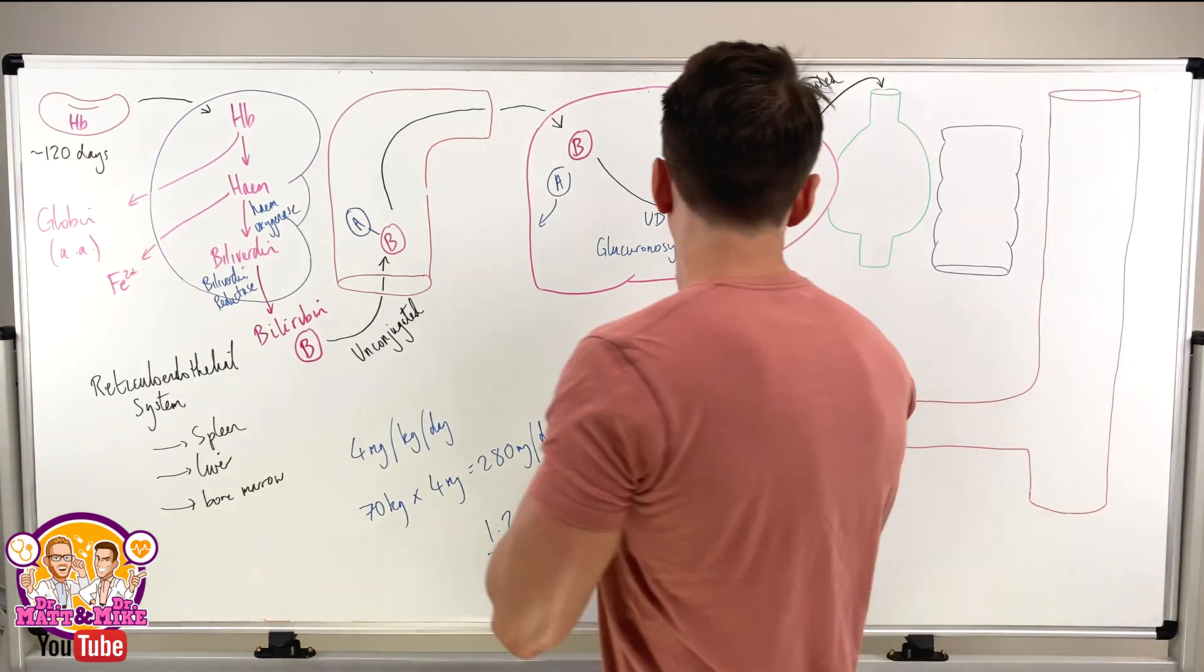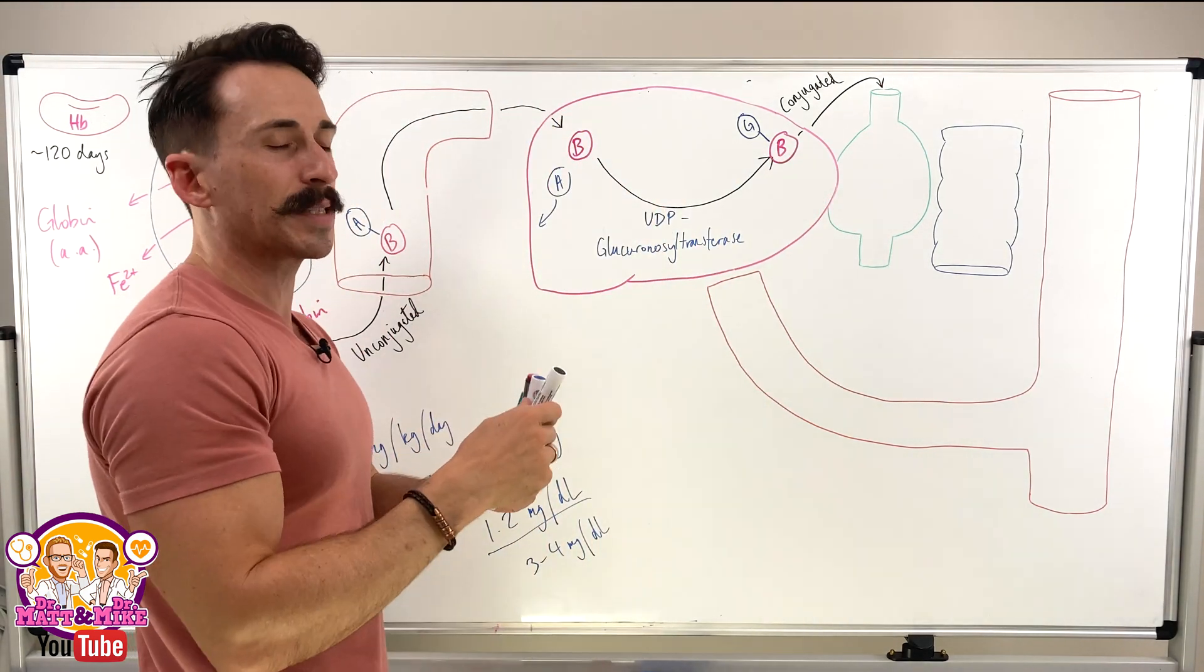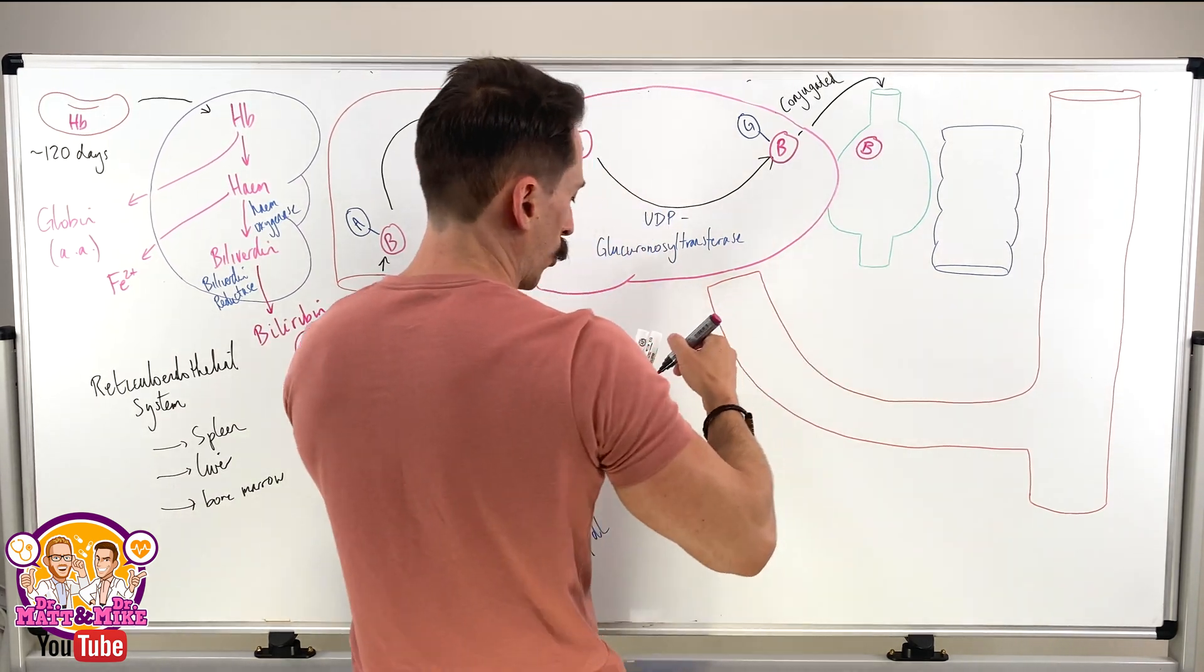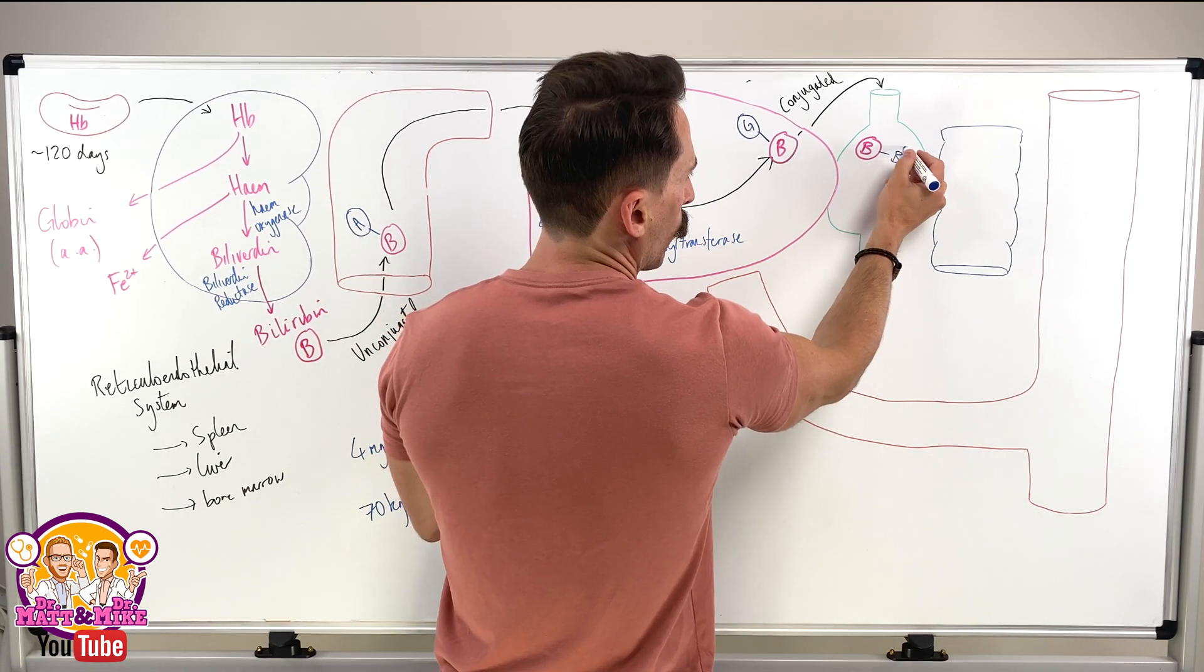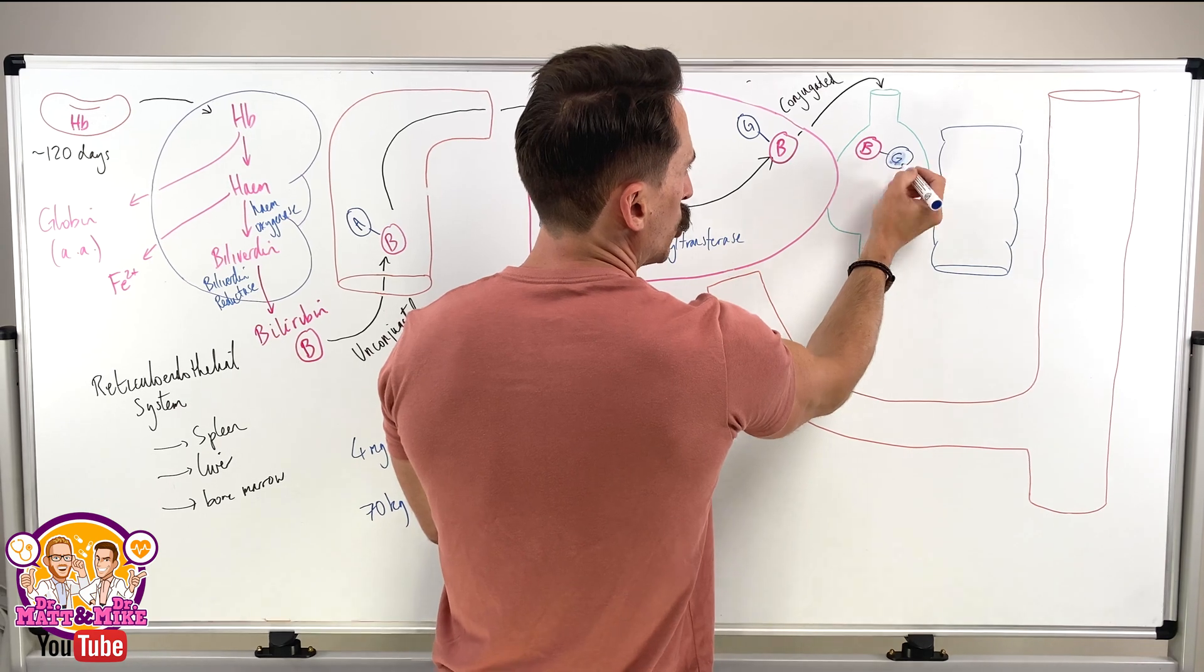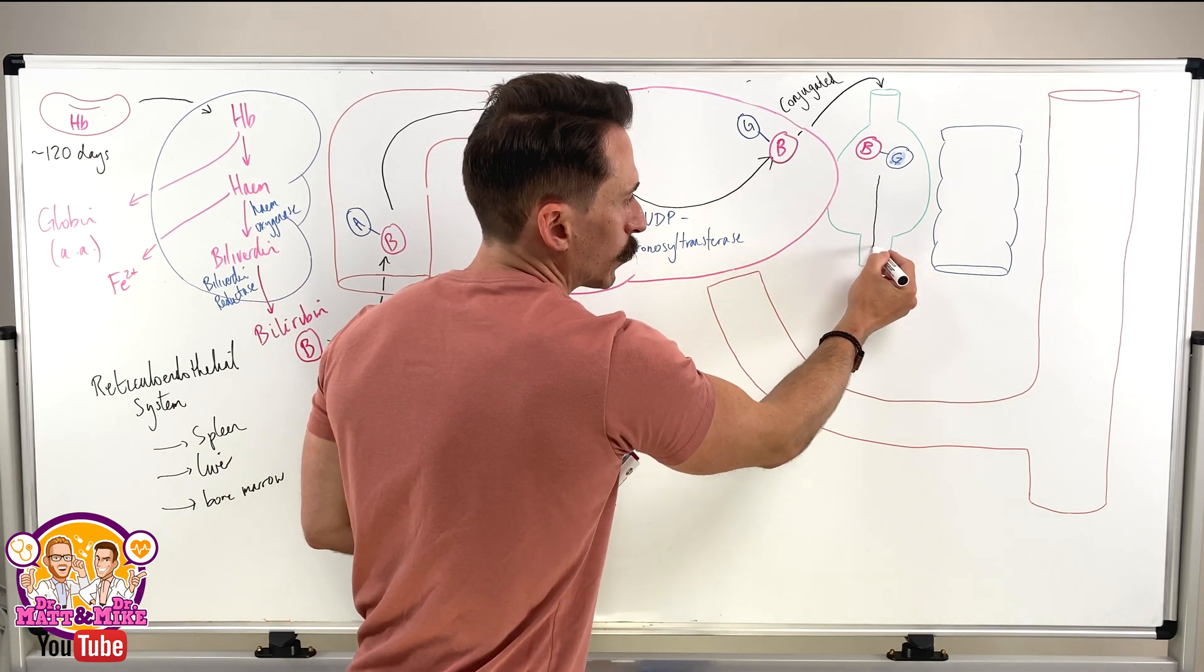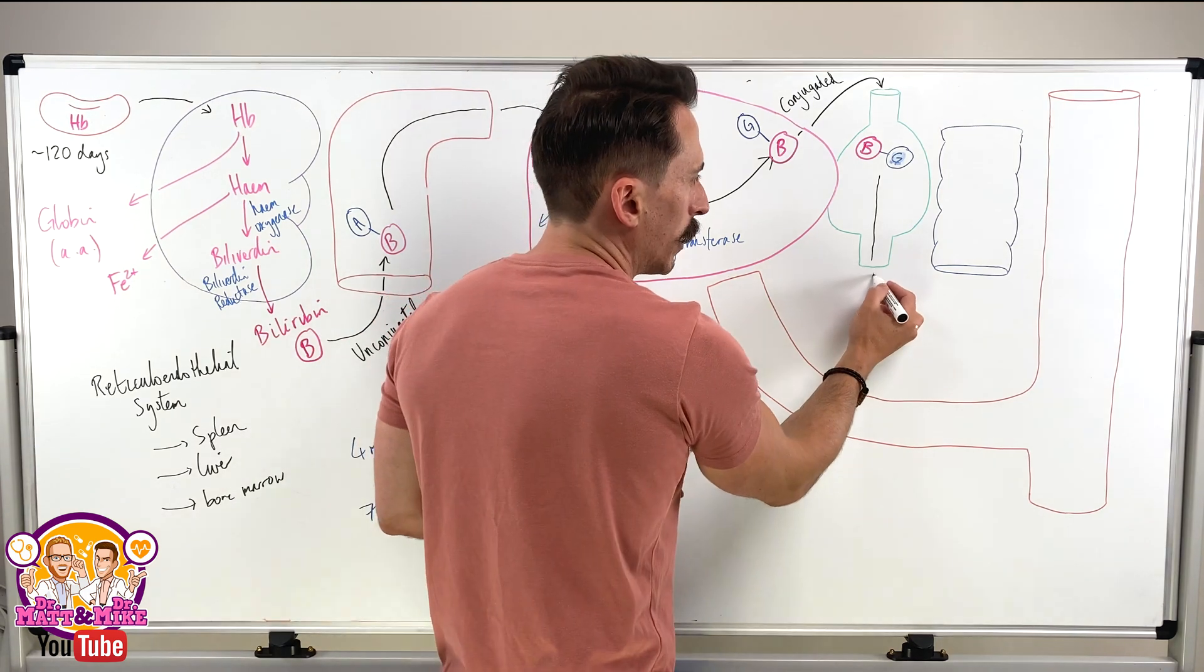So this conjugated bilirubin gets thrown from the liver into the gallbladder. The gallbladder contains bile. So now we've got bilirubin conjugated to glucuronic acid, which we can just call conjugated bilirubin mixed in with the bile. What does bile do when we eat fatty meals? It squirts this out when we have a fatty meal because bile emulsifies fats. So that means it gets squirted into the intestines.